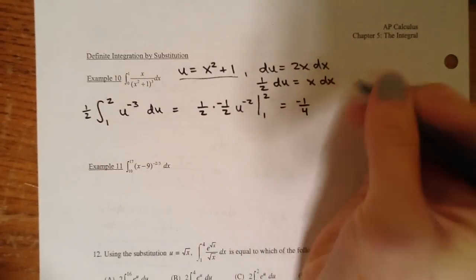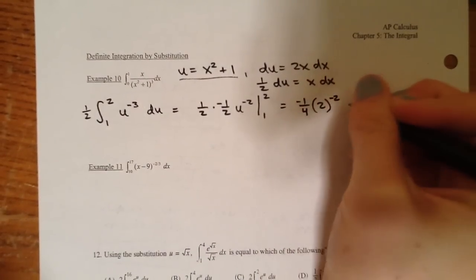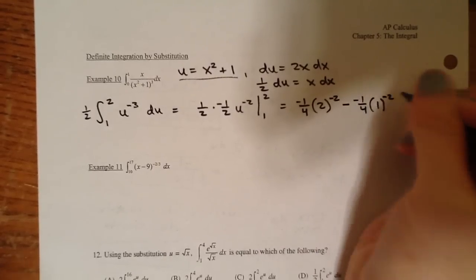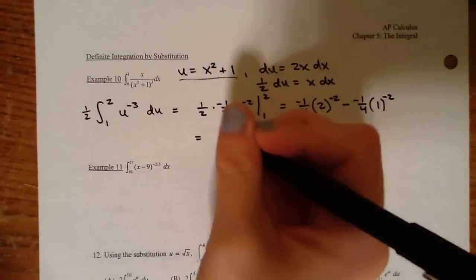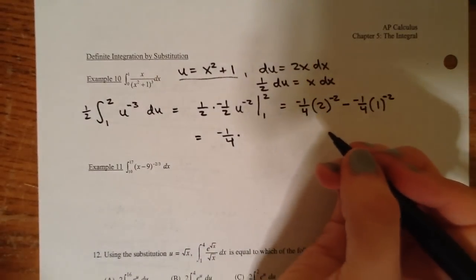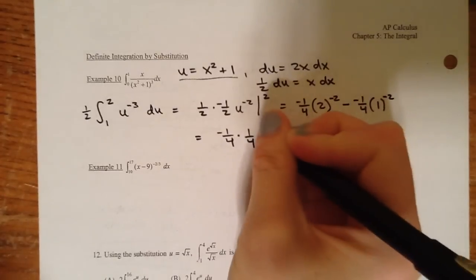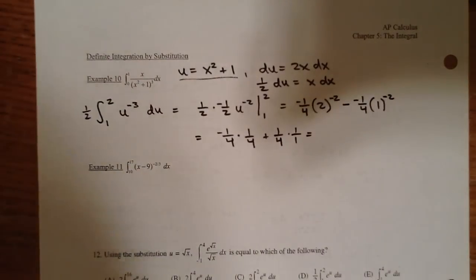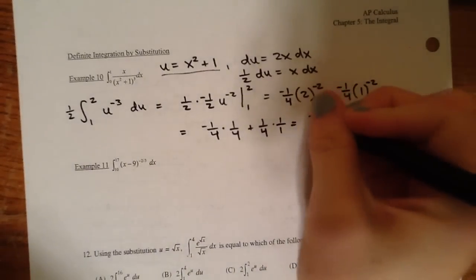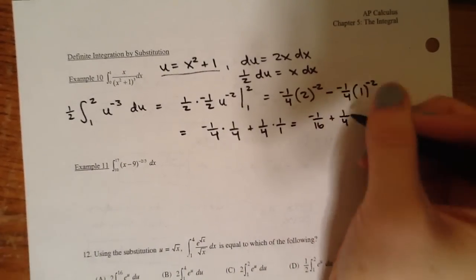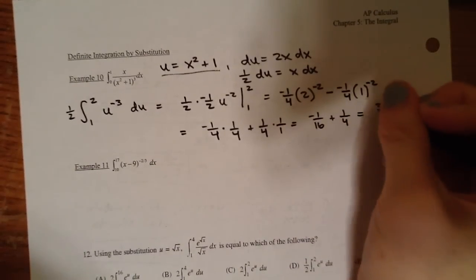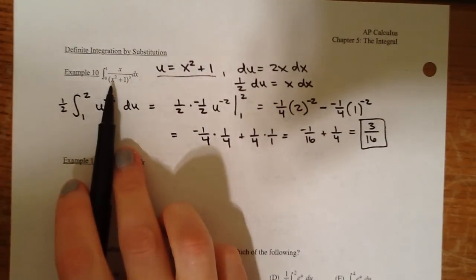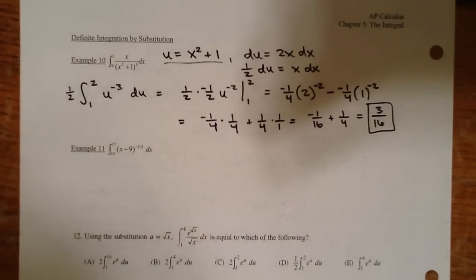Taking the antiderivative: the power pops up to -2, and I divide by -2. Evaluating from 1 to 2, I have (1/2) · (-1/2) · [2^(-2) - 1^(-2)] = -1/4 · (1/4) + 1/4 · 1 = -1/16 + 4/16 = 3/16. So my final answer is 3/16. You could always check by plugging into a calculator and it would give 3/16.